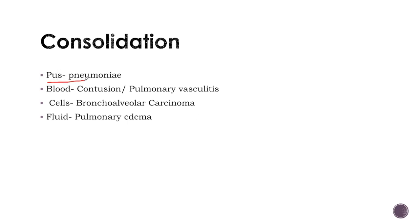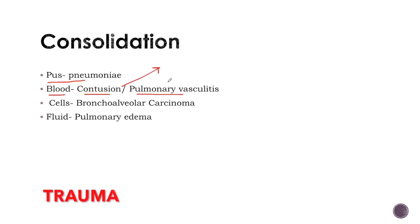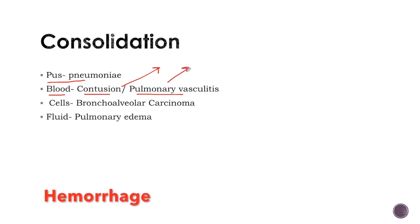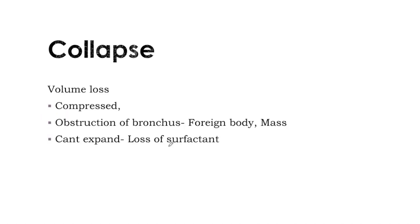Different substances may coalesce in the alveoli to form consolidation. If pus accumulates in the alveoli, it is called pneumonia. Blood may accumulate in the alveoli in case of lung contusion or pulmonary vasculitis. Cells may also fill the alveoli in case of bronchioalveolar carcinoma. Fluid may fill the alveoli in case of pulmonary edema.